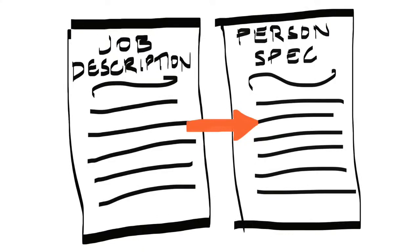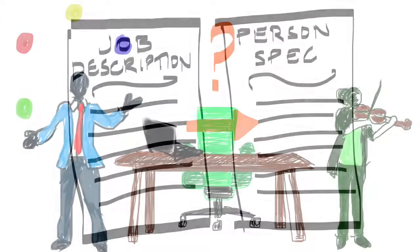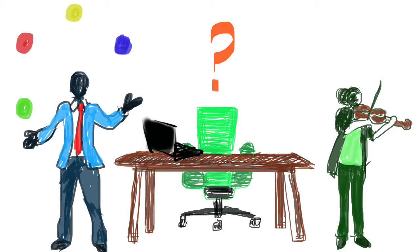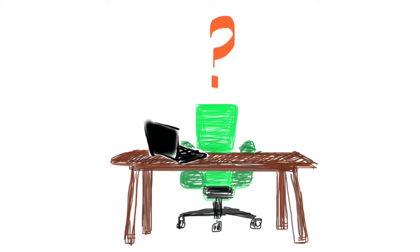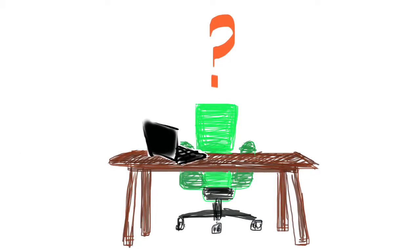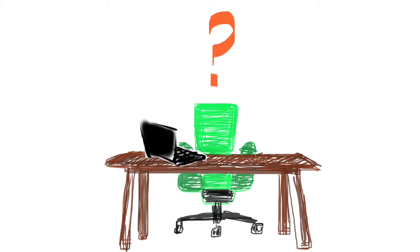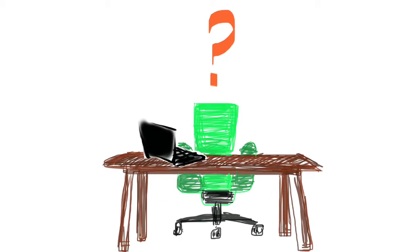Step 3. In your person specification, you may decide to set some factors as essential and others as desirable. Be really clear that essential really is essential. If there are too many of these, especially ones that really aren't critical, then this may dissuade someone from applying who otherwise would be an exceptionally good candidate.